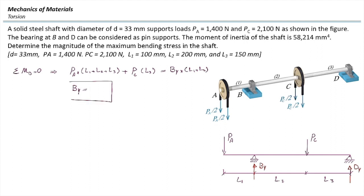The other equation we need is the sum of forces in the Y direction. There are two forces pushing the structure downward — P_A and P_C — and two reaction forces in the upward direction: B_Y and D_Y. Three of these four parameters are known, and from that we can determine D_Y.